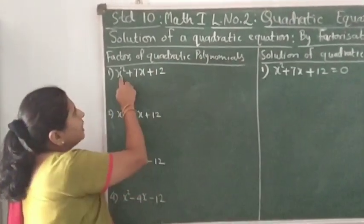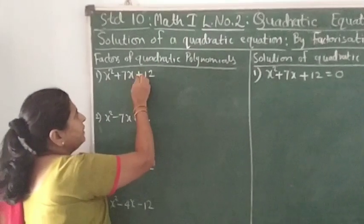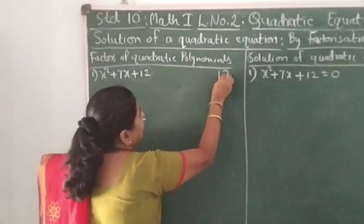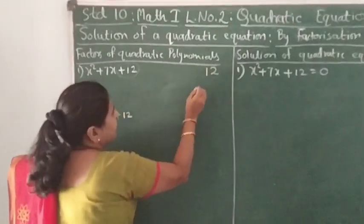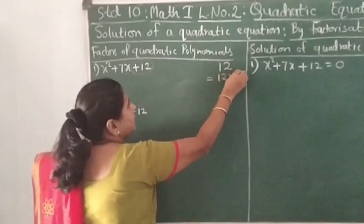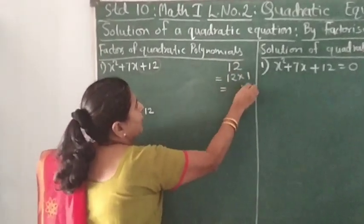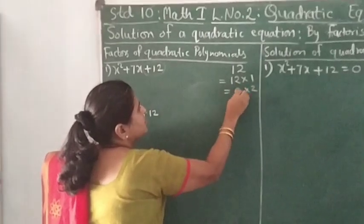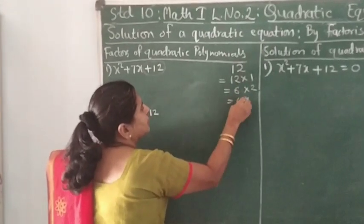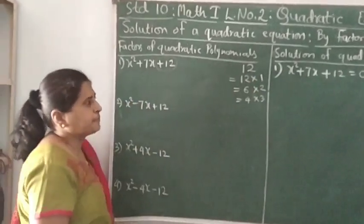If we compare with ax² + bx + c, we will try to write the factors of c, which is 12. The factors of 12 are: 1 × 12, 2 × 6, and 3 × 4. These are the three types of factor pairs of 12.